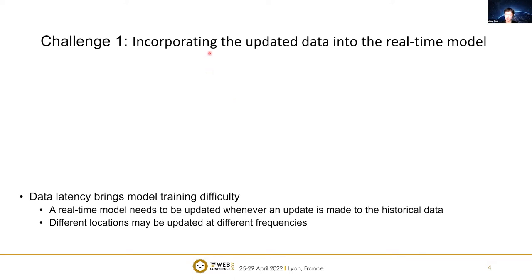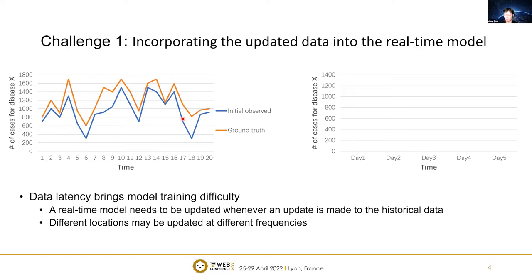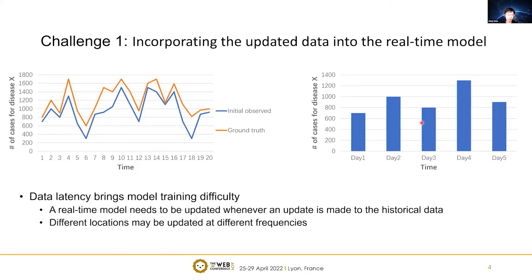Generally, population-level disease prediction is a regression task based on historical disease statistics, demographics, and other features, with the target outputs being number of cases for future several days. Accurate prediction can help optimize medical resources and select appropriate clinical trial sites. However, a key challenge is how to incorporate updated data into a real-time model. Traditional disease prediction assumes data received is reliable and accurate, which is often not true. In practice, data collection is time-consuming and has time delays, so disease statistics require continuous updates. For example, statistics received at day one may get updated over the following several days. Such data latency needs to be considered, and different locations may be updated at different frequencies, increasing the complexity.